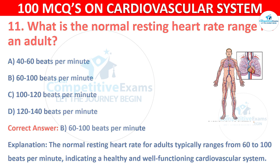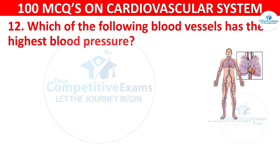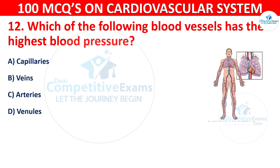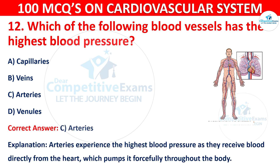Q12. Which of the following blood vessels have the highest blood pressure? Options are: capillaries, veins, arteries, or venules. The correct answer is C — arteries. Arteries experience the highest blood pressure as they receive blood directly from the heart, which pumps it forcefully throughout the body.